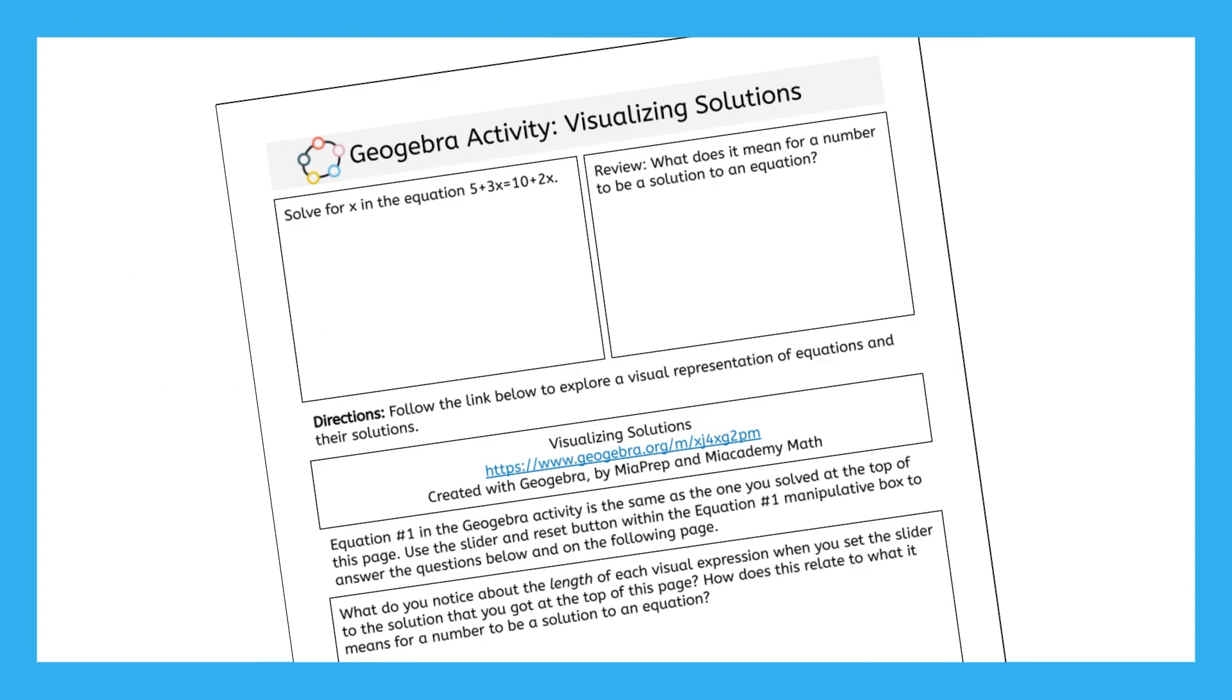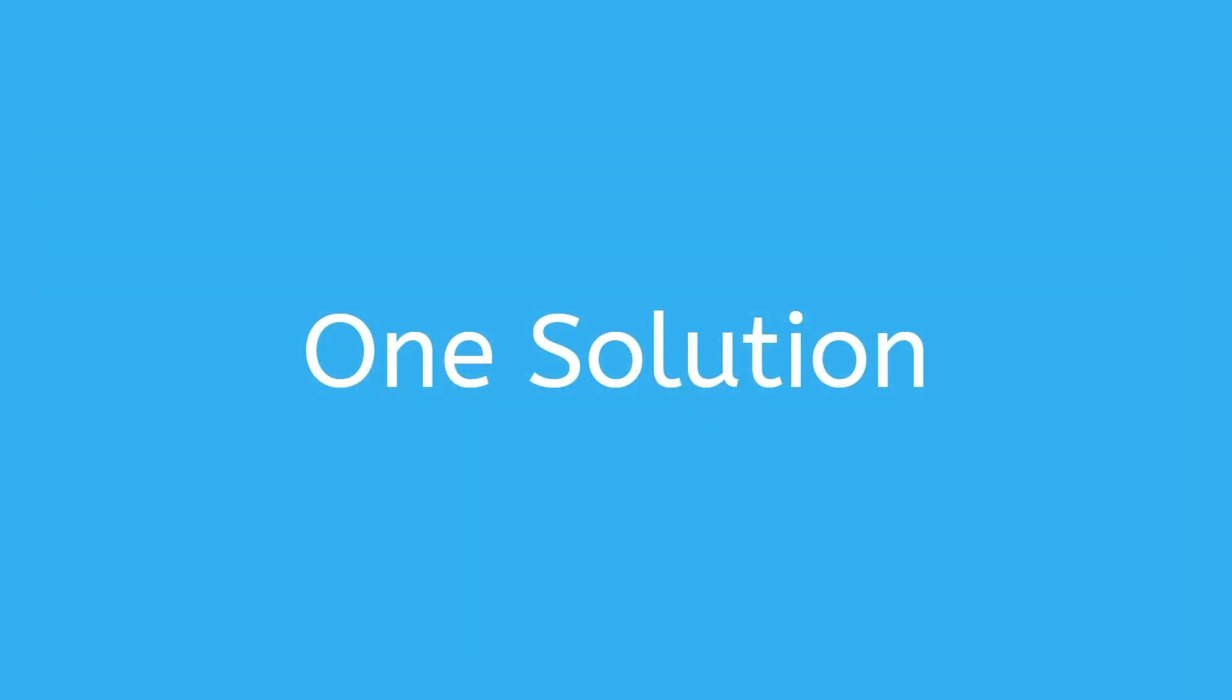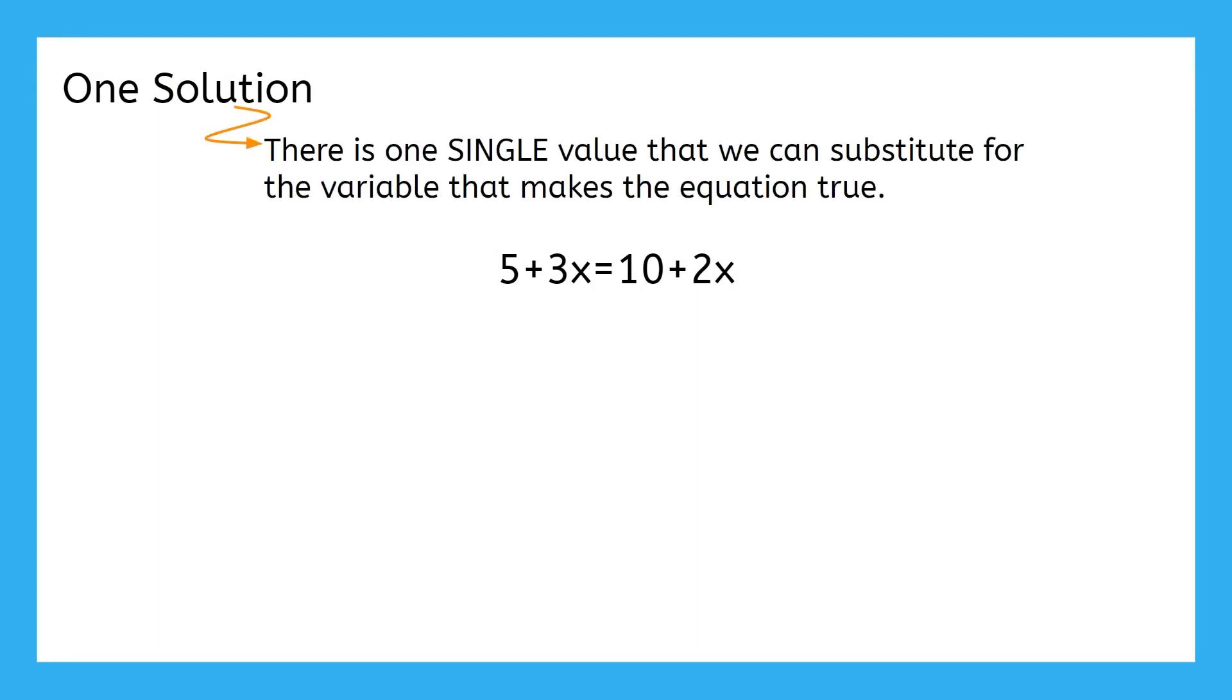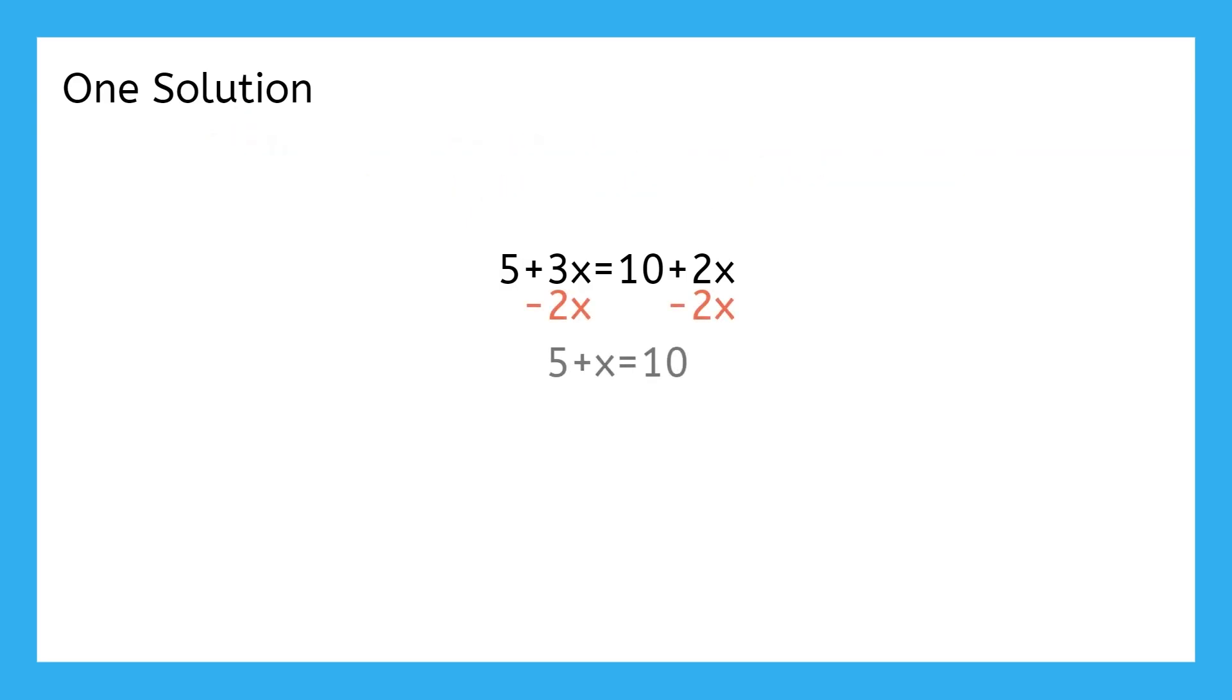We'll talk about these equations and what they mean as we go through this lesson. Before today, all of the equations we looked at so far in this course had one solution. Having one solution means that there is one single value that we can substitute for the variable that makes the equation true. Like we've been doing all unit, we get that one single solution by isolating the variable and we can recognize the solution because it looks like the variable equals some number.